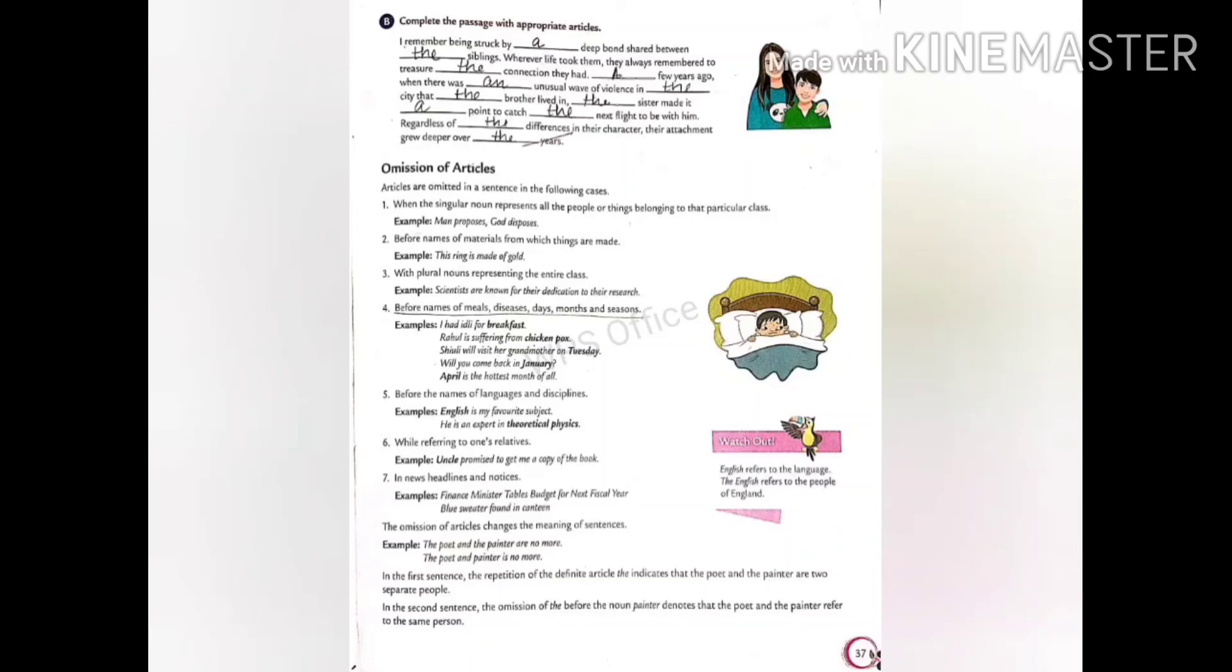But if before the nouns we have only one the, that means it is referring to only one person. That's why in the first sentence, we have put are after the subject and is in the second sentence after the subject.